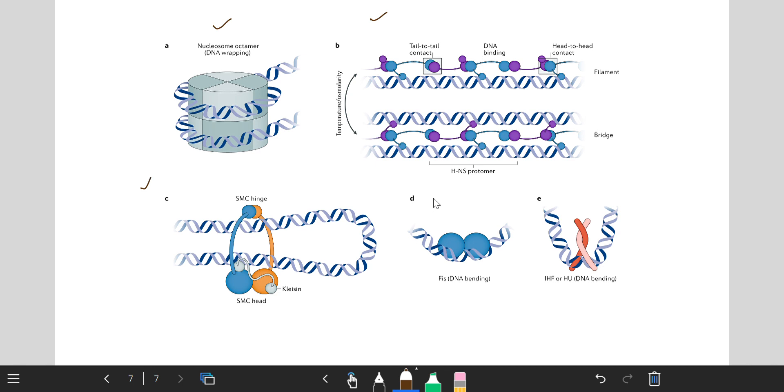The fourth one represents FIS protein inducing DNA bending up to 50 to 60 degree angular bending. The last picture represents how IHF and HU protein help in DNA bending up to 160 degree angle.